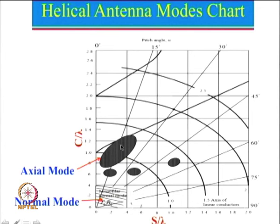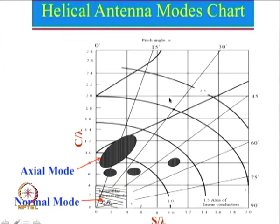If alpha is between 12 to 14 degrees, it gives approximately circular polarization, and correspondingly we can calculate the value of s/lambda. The higher order modes — where c/lambda equals 2 or 3 — give conical patterns, but these are normally not used. So practically, higher order modes are not used for helical antenna.